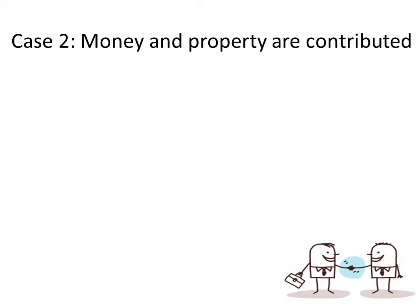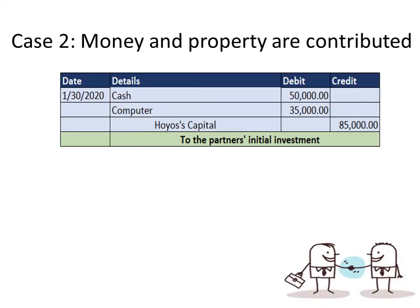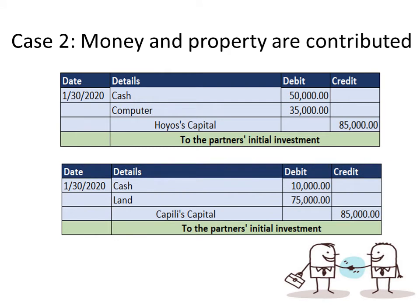We can also do single entry accounting. For Huyoz: debit cash $50,000, computer $35,000, credit Huyoz capital $85,000 to record Huyoz's contribution. For Kapili: debit cash $10,000, LAN $75,000, credit Kapili's capital $85,000 — same result as the compound entry.